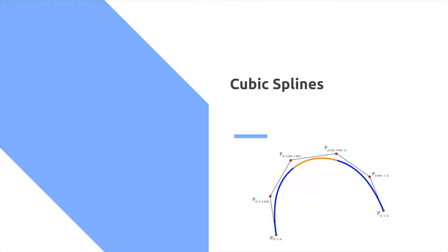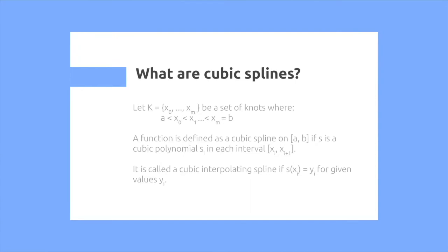On the other hand, we also have cubic splines. So what are cubic splines? Let k from x equals 0 to xm be a set of knots, where a is less than x0 is less than x1, which is less than all the way up to xm, is equal to b. A function is defined as a cubic spline on ab if s is a cubic polynomial si in each interval xi to xi plus 1.